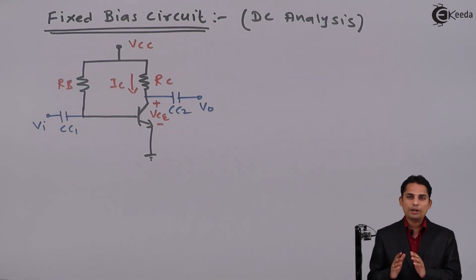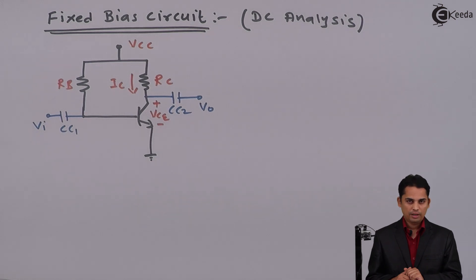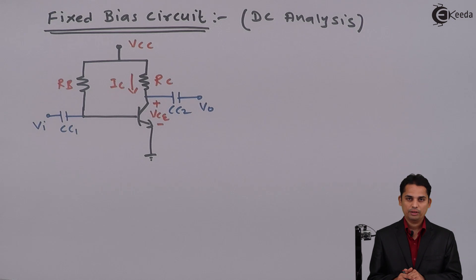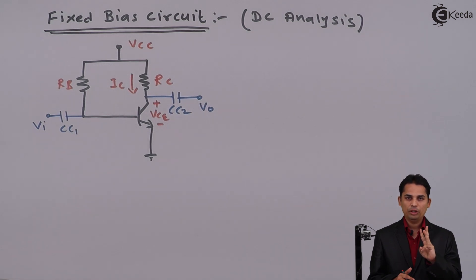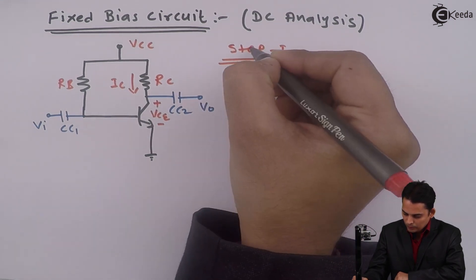In DC analysis, the steps will remain common irrespective of the circuit. There are basically three steps. In step one, we will find out input current called as IB or base current. In step two, we will find out collector current or output current IC. And in step three, we will find out voltage across the transistor called as VCE.